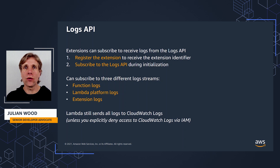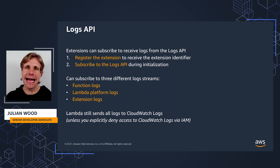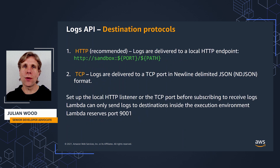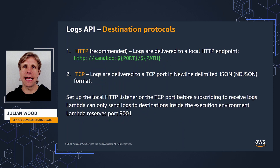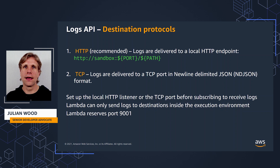Lambda does send all logs to CloudWatch even when an extension subscribes to one or more of the log streams. You can disable writing to CloudWatch logs by disabling access via an IAM deny policy. You can choose one of the following protocols to receive the logs. HTTP, which is recommended — logs are delivered to a local HTTP endpoint the extension sets up as an array of records in JSON format. Only HTTP is supported, not HTTPS, and you can choose to receive logs through PUT or POST. You can also use TCP, where logs are delivered to a TCP port in NDJSON format.